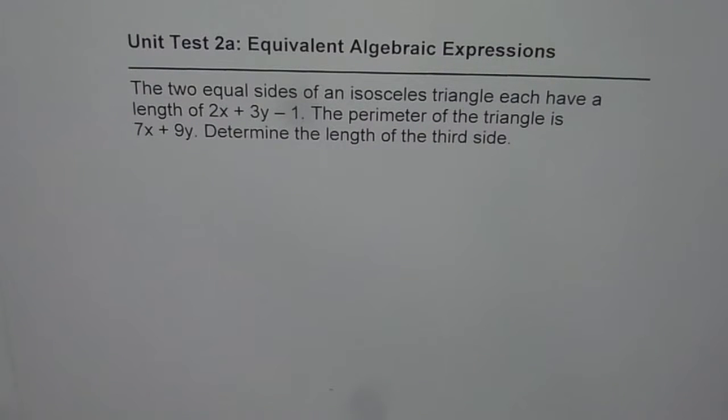Unit test 2A: Equivalent Algebraic Expressions. The two equal sides of an isosceles triangle each have a length of 2x + 3y - 1. The perimeter of the triangle is 7x + 9y. Determine the length of the third side.